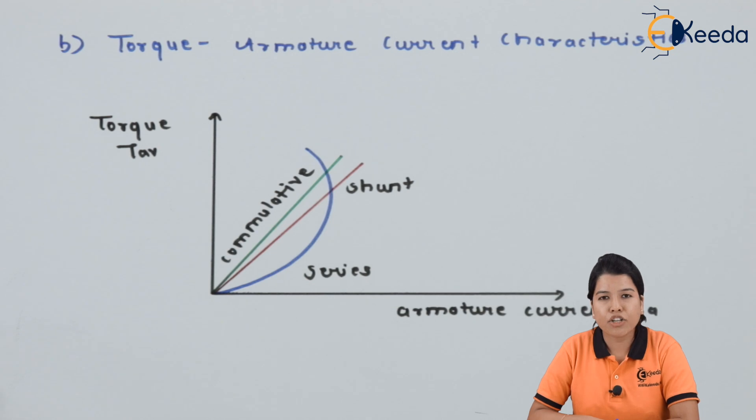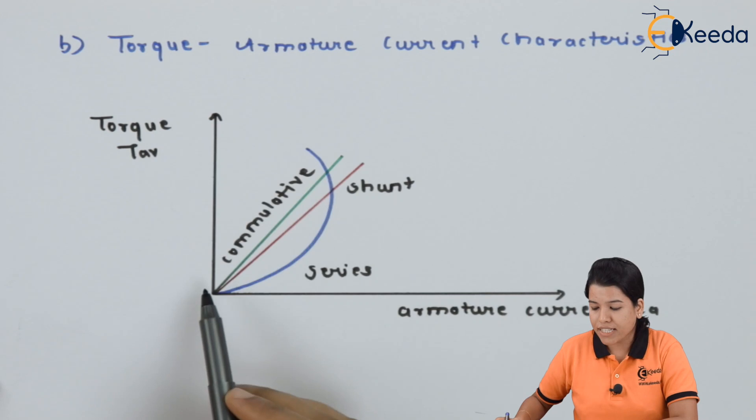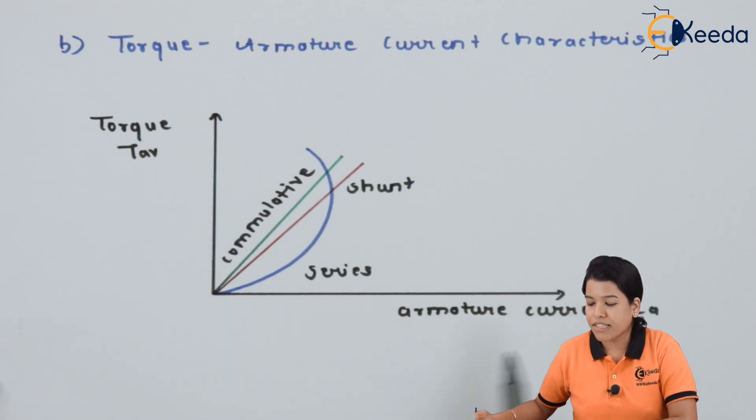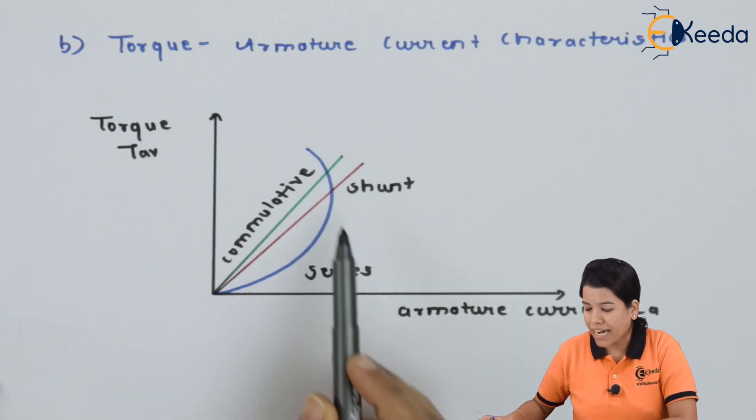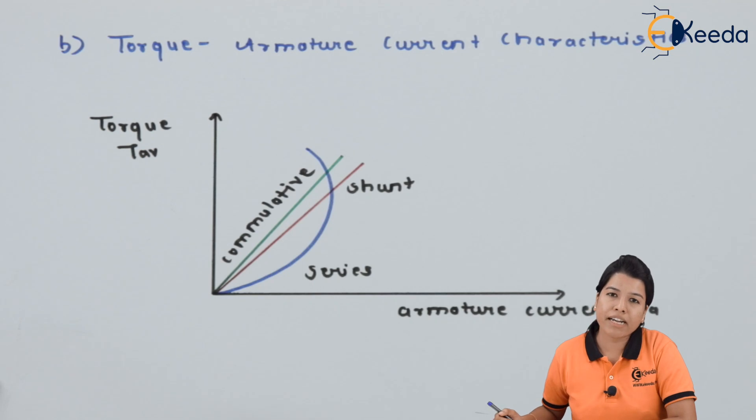Second is the torque vs. armature current characteristic. Again, if we see, the y-axis is the torque, x-axis is the armature current and the characteristic is drawn again by combining the characteristic of shunt series and cumulative compound motor.